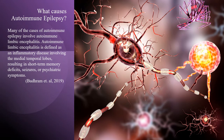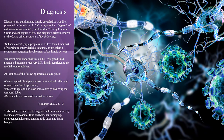Many of the cases of autoimmune epilepsy involve autoimmune limbic encephalitis. Autoimmune limbic encephalitis is defined as an inflammatory disease involving the medial temporal lobes resulting in short-term memory deficits, seizures, or psychiatric symptoms. Diagnosis for autoimmune limbic encephalitis was first presented in the article 'A Clinical Approach to Diagnosis of Autoimmune Encephalitis,' published in 2016 by Francis Gross and colleagues.